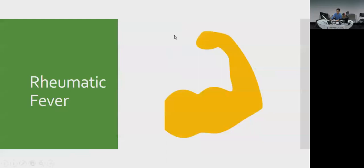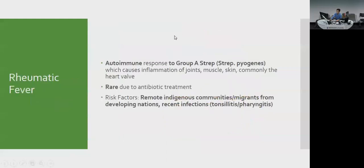Rheumatic fever results from an autoimmune response to Group A Streptococcus — causing inflammation of joints, muscles, and most importantly the heart, leading to rheumatic heart disease. It's rare in Australia now due to antibiotic treatment, but remains a concern in remote Indigenous communities and migrants from lower socioeconomic backgrounds. The trigger is usually Group A strep tonsillitis or pharyngitis — strep throat.